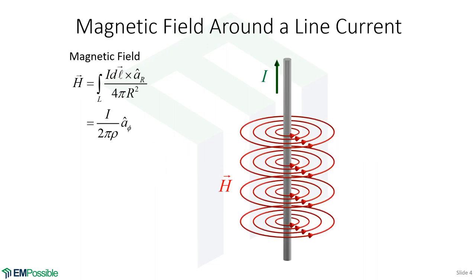If we do this for a wire of infinite length, we get a very nice solution. It is the current divided by 2π and the distance you're observing the magnetic field from the wire. The magnetic field is circulating around this wire, so in cylindrical coordinates that would be the φ direction. This is the answer for an infinite length wire, and in the examples we will derive that. We'll also derive it for a finite length wire.